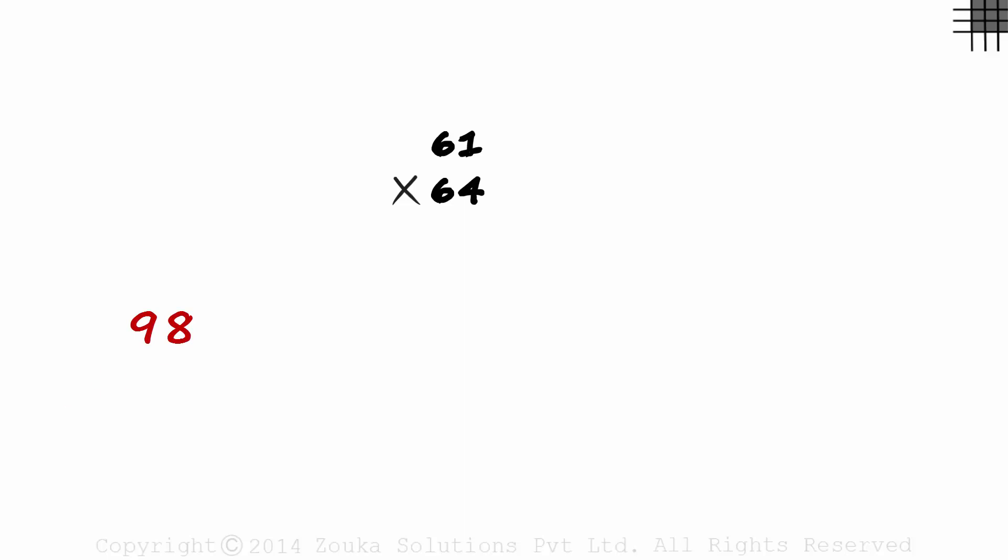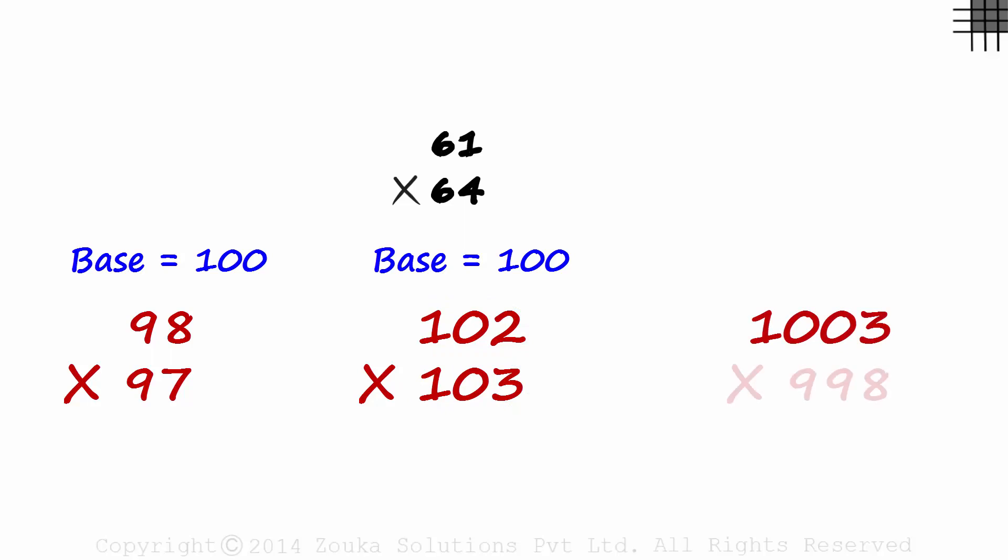We have seen examples like 98 times 97 where both numbers were below the base, 102 times 103 where both numbers were above the base, and 1003 times 998 where one was above and the other below the base.